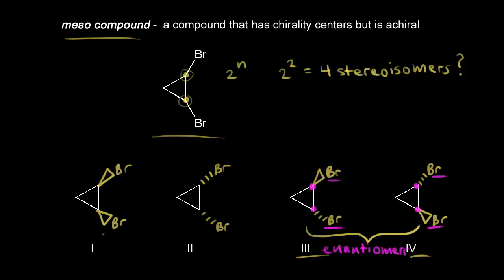What about the relationship between one and two? At first we might say those are enantiomers, because here we have a wedge and then over here we have a dash, and here we have a wedge and here we have a dash. So that should be the opposite configuration at both chirality centers, and those might be enantiomers. But let's go to the video to see if that's true.